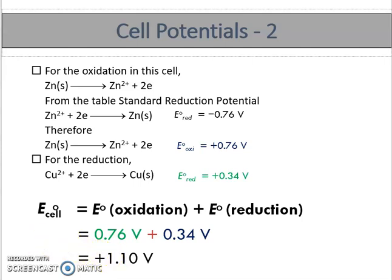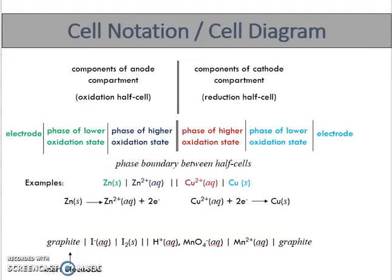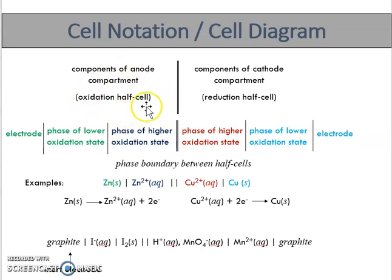Next, let's look at how to write the cell notation or cell diagram. The cell notation shows the compartments of the anode and cathode. The anode is always written on the left side, and the cathode is always written on the right side.